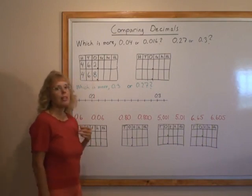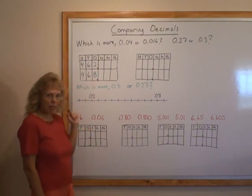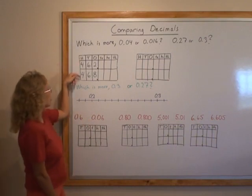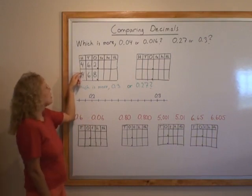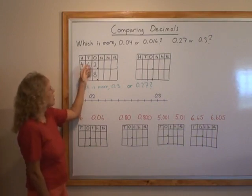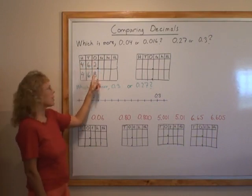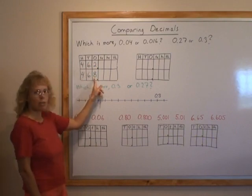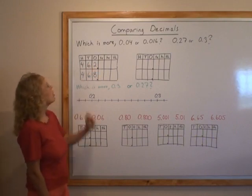Now to compare them, we look at the biggest place value unit here. We look at the hundreds and they both have four hundreds. These numbers both have six tens and then we come to the ones. This is 2, this is 8. So therefore this is more because 8 ones is more than 2 ones.